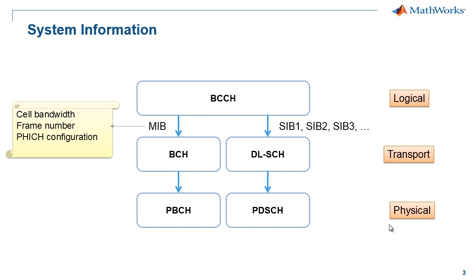Let us now talk about system information in LTE. LTE system information is transmitted in the BCCH logical channel. A small part of the BCCH information is carried on the BCH transport channel and transmitted on the PBCH. This is the master information block, or MIB, which includes the cell bandwidth and frame number. All other system information is carried on the DLSCH and transmitted on the PDSCH, like regular data transmission.